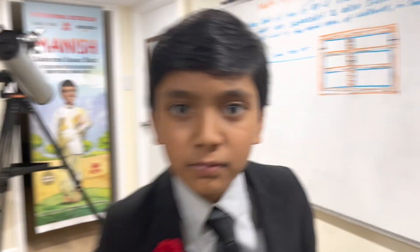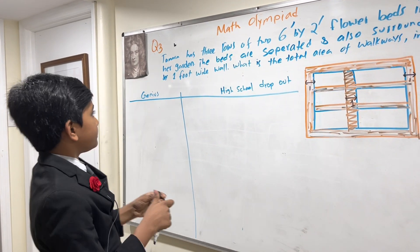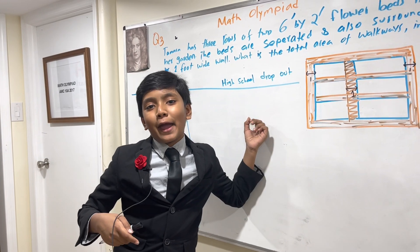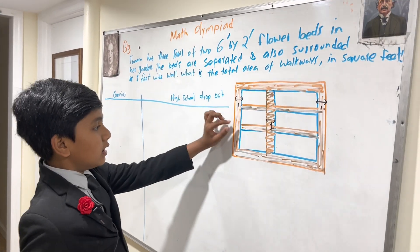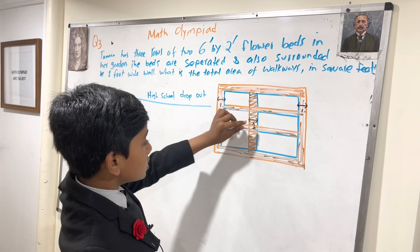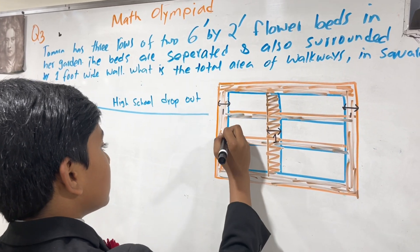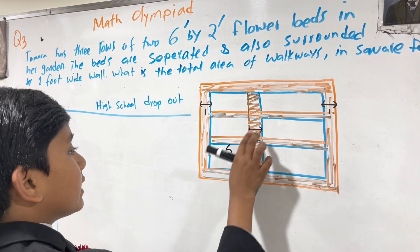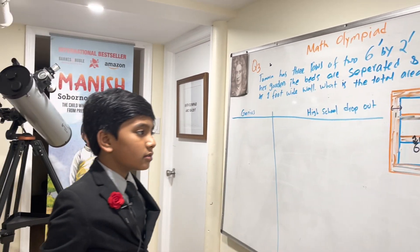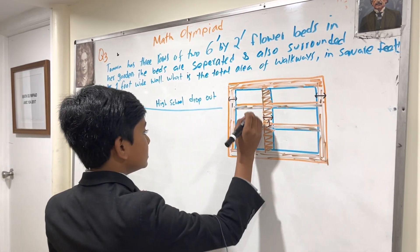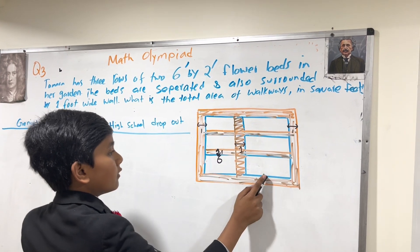First, let's do it the high school dropout way. The high school dropout way is basically just to take the width of these smaller lengths. So how big are these smaller ones? We have six by one — so they are six by one since these walkways are one inch wide. Oh wait, you forgot to include this one.